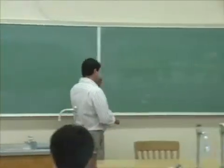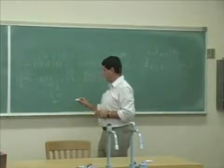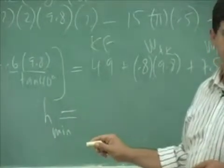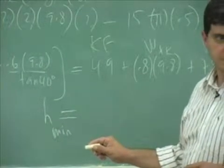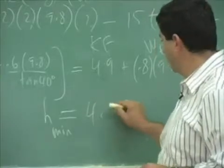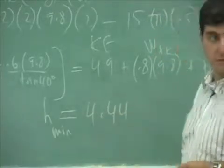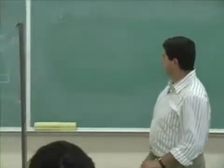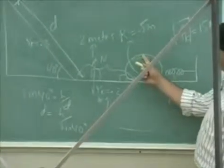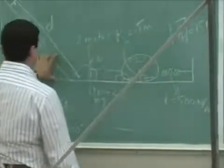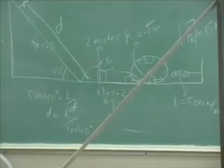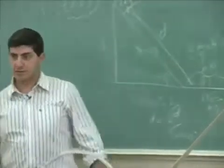Did we get the answer here? Four point four four four four meters. Others got that too. That seems quite high, even though this is a half a meter and this is one meter. So you need four times that — one, two, three, four. Quite high.